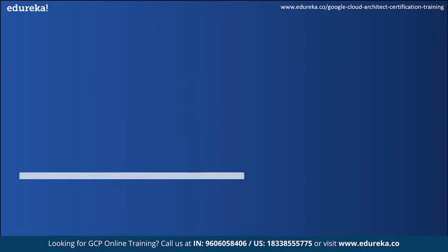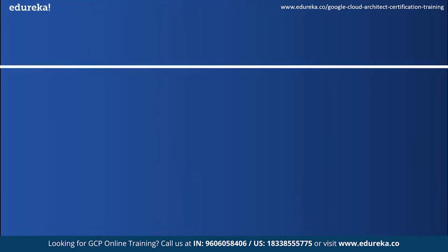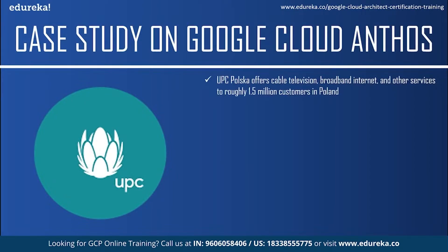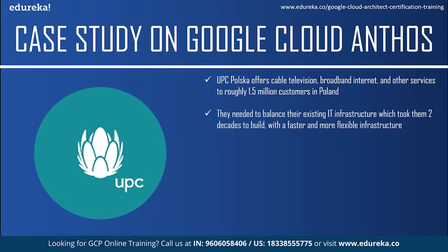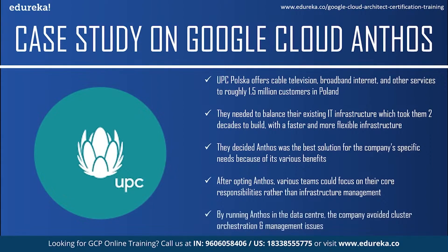This was about Google Cloud Anthos pricing. Now let us see a case study on Google Cloud Anthos. UPC Polska is the Polish telecommunication arm of Liberty Global Europe which offers cable television, broadband internet and other services to roughly 1.5 million customers in Poland. The problem they faced was they needed to balance their existing IT infrastructure, which took two decades to build, with a faster and more flexible infrastructure. They decided to opt for hybrid IT, which would give them the speed to market they needed while maintaining their existing infrastructure.